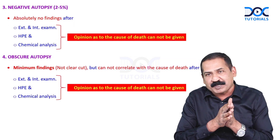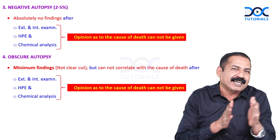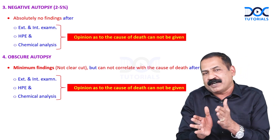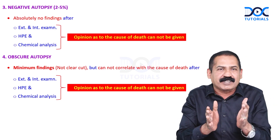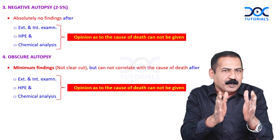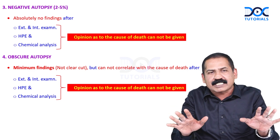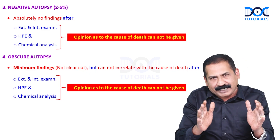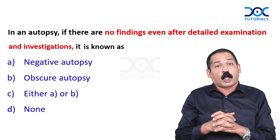Now see the exact difference: an opinion as to the cause of death cannot be given in both negative autopsy and obscure autopsy. The difference is that in negative autopsy there are absolutely no findings, whereas in obscure autopsy there are minimal findings.